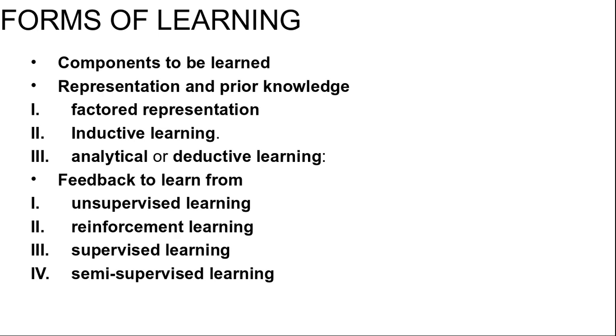Third, supervised learning: the agent observes example input-output pairs and learns a function that maps from input to output. In the first component, the inputs are percepts and outputs are provided by a teacher who says 'brake' or 'turn left'. In the second component, inputs are camera images and a teacher says 'that's a bus'. In the third component, the theory of braking is a function from states and braking actions to stopping distance. In this case, the output value is available directly from the agent's percepts, and the environment acts as the teacher.